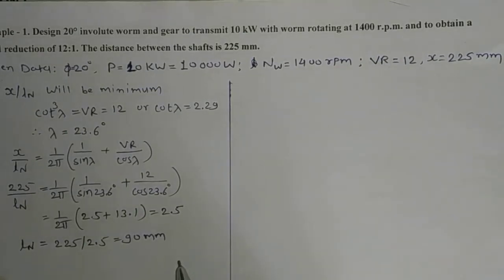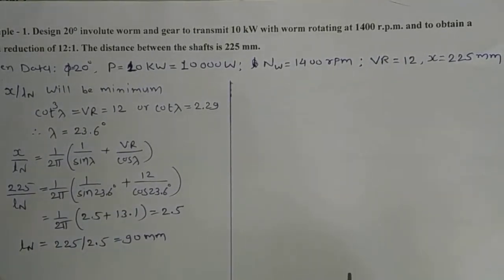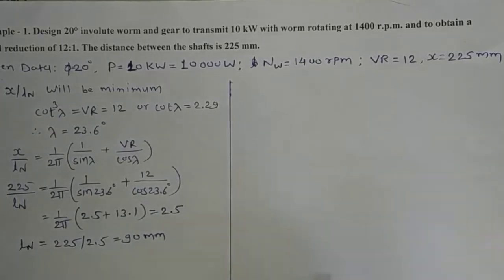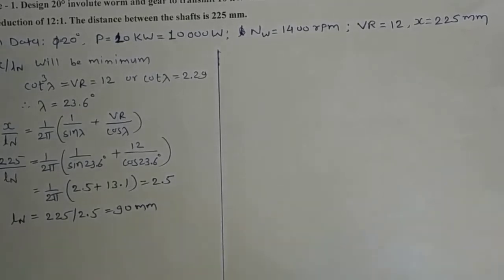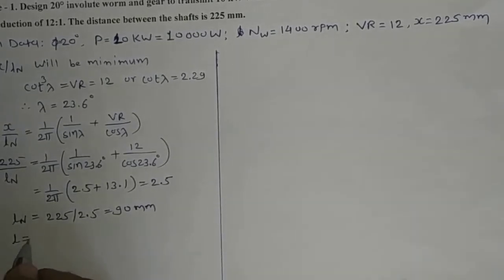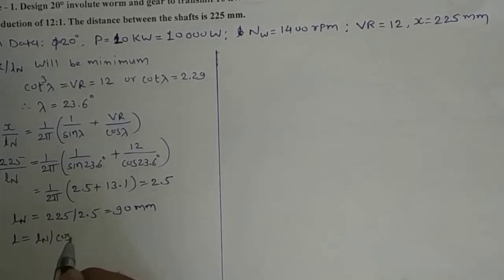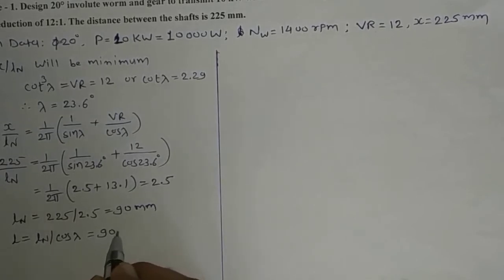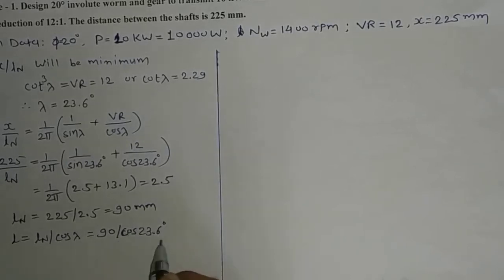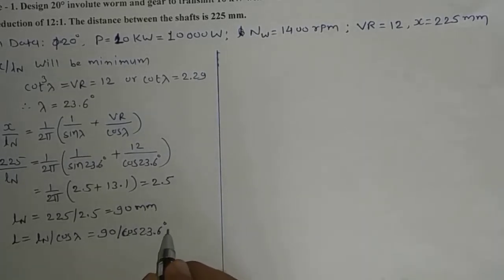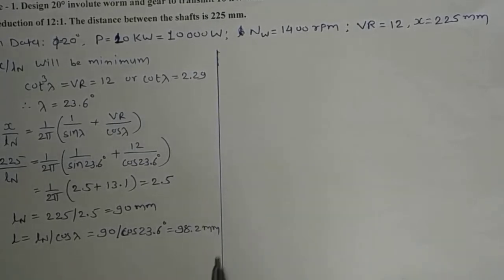The axial lead L = L_n / cosλ = 90 / cos(23.6°) = 98.2 mm.